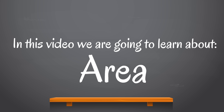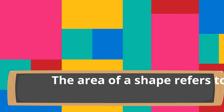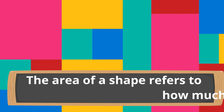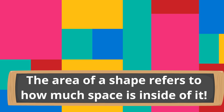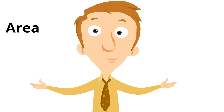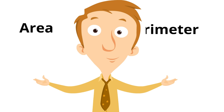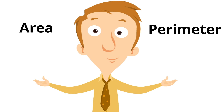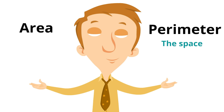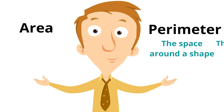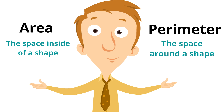In this video, we are going to learn about area. Area is something we can discover about shapes. The area of a shape refers to how much space is inside of it. Area is very different from perimeter. If you'll remember, perimeter is the space around a shape. Area is the space inside of a shape.